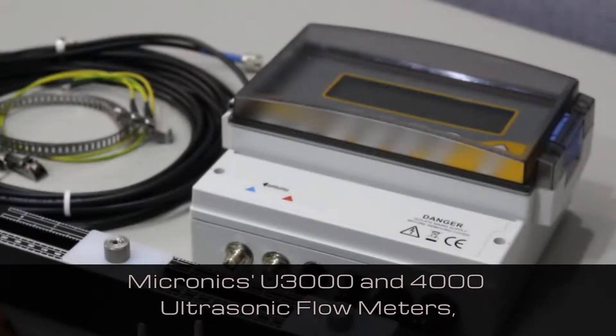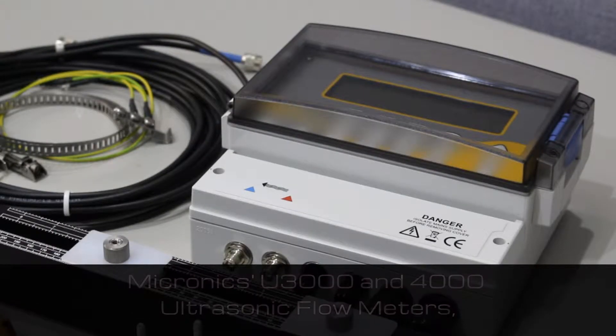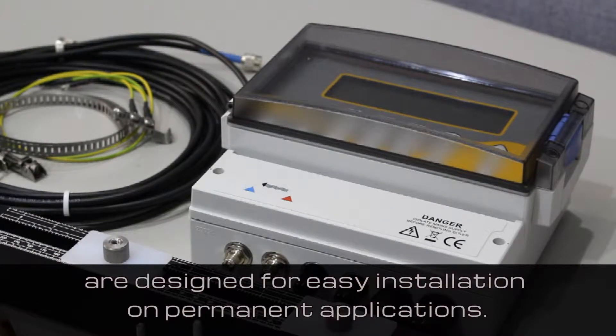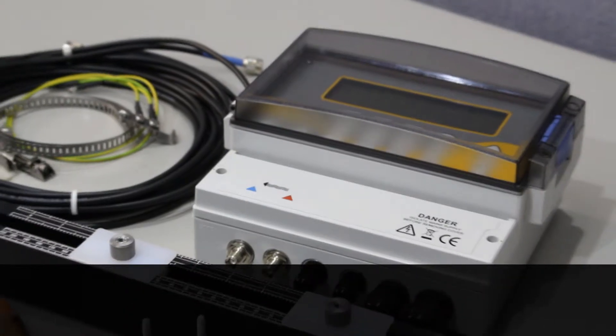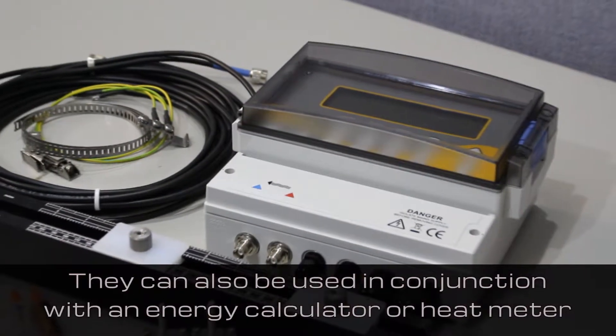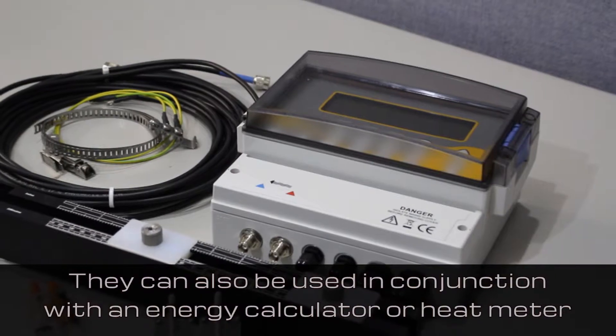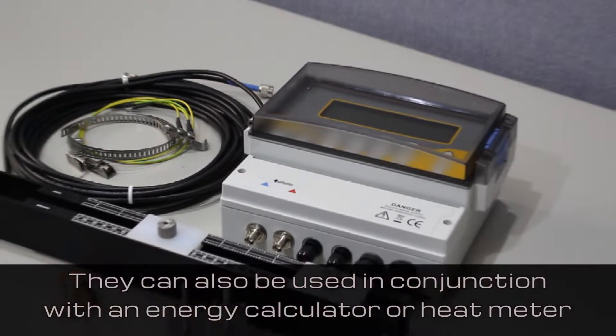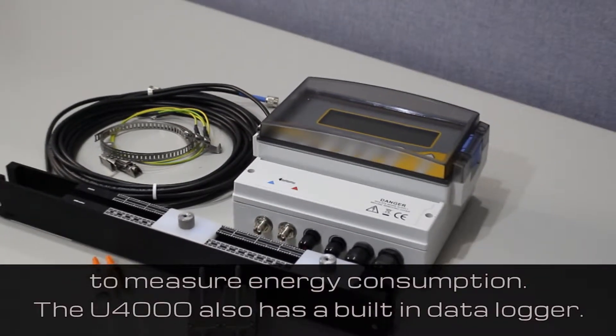Micronix U3000 and 4000 ultrasonic flow meters are designed for easy installation on permanent applications. They measure flow just like any other meter except that they can also be used in conjunction with an energy calculator or heat meter to measure energy consumption.